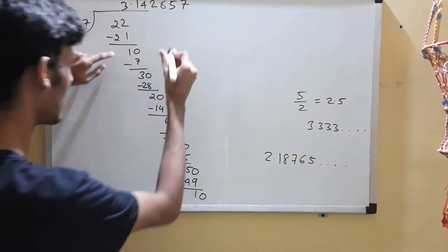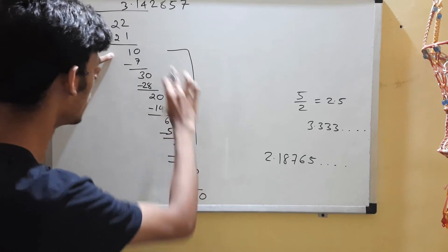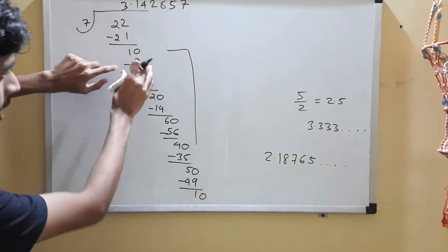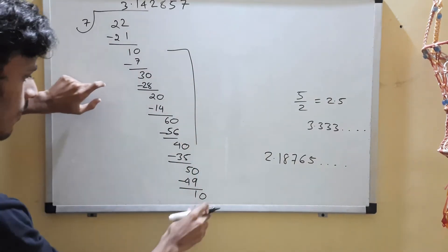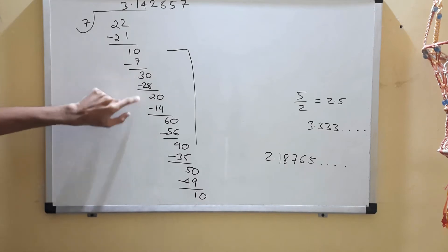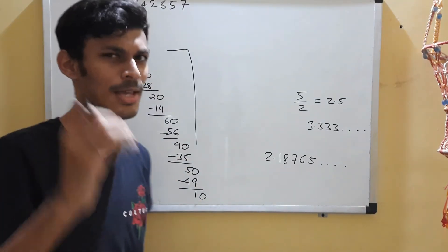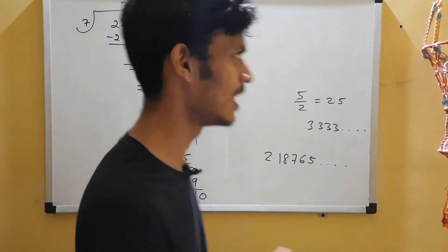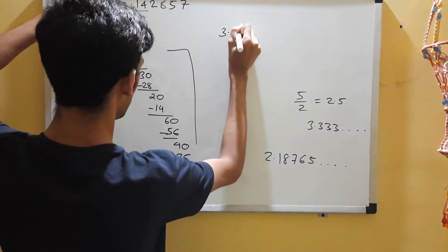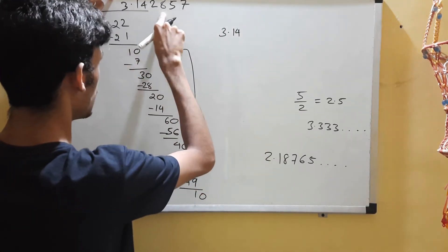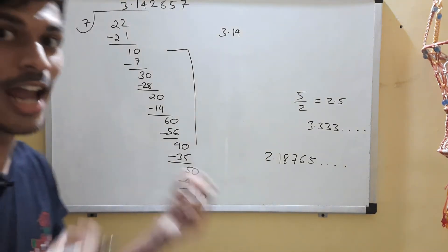This cycle is going to repeat right from here. You'll get 10, then again 7 ones are 7, then you'll get 30, 20. This cycle basically is going to repeat, which means we are going to get the same decimal places: 1, 4, 2, 8, 5, 7, over and over again.